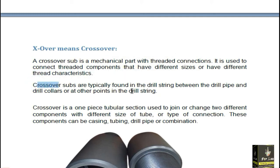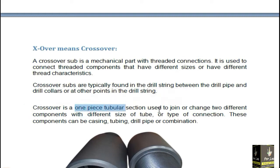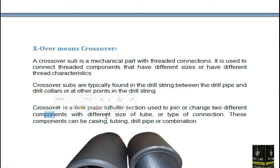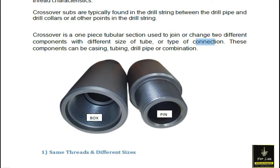The crossover sub is used to connect threaded components that have different sizes and different thread characteristics. Crossover subs are typically found connecting drill pipes, drill collars, and other points of the drill string. A crossover is a one-piece tubular section used to join two different components with different size and type of connections. These components can be casing, tubing, drill pipe, or a combination.